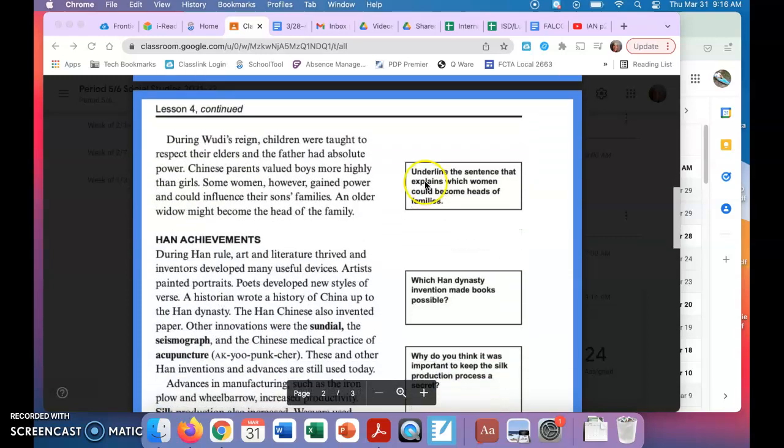The next section you're going to underline the sentence that explains why women could become heads of family. During Wu Di's reign, children were taught to respect their elders and the father had absolute power.